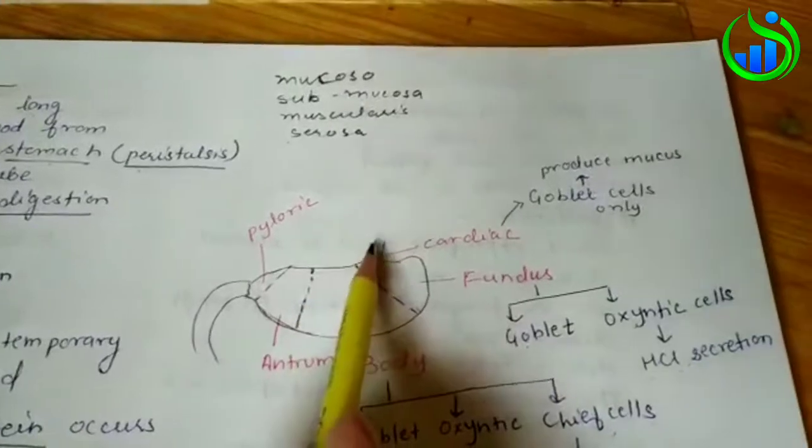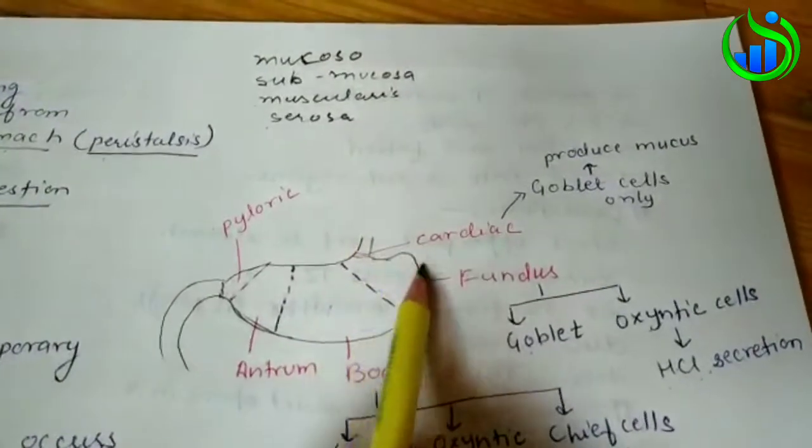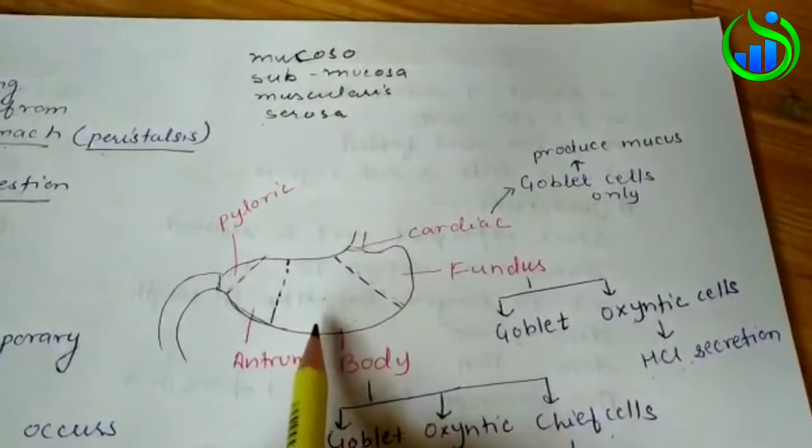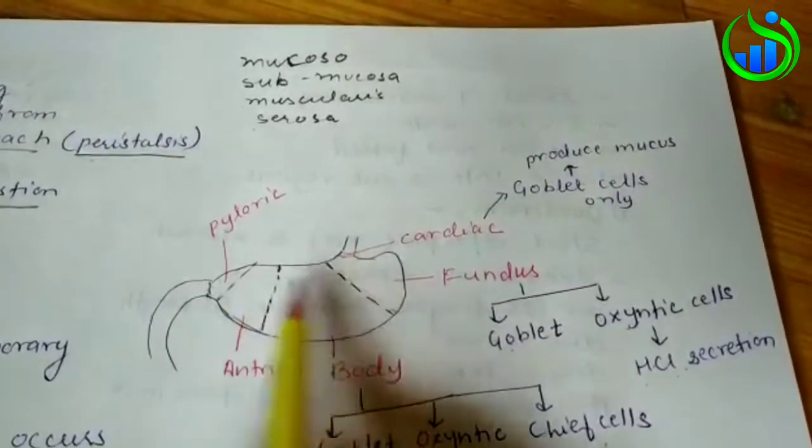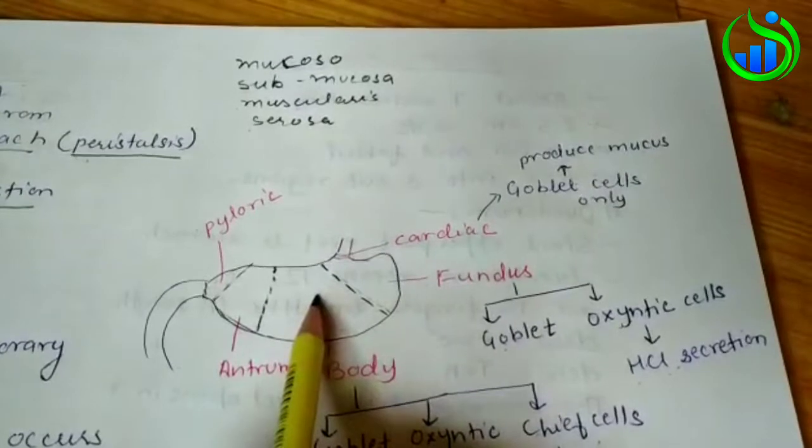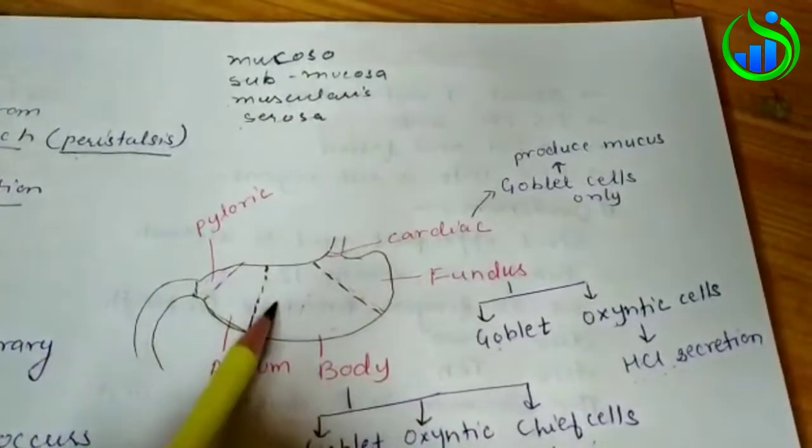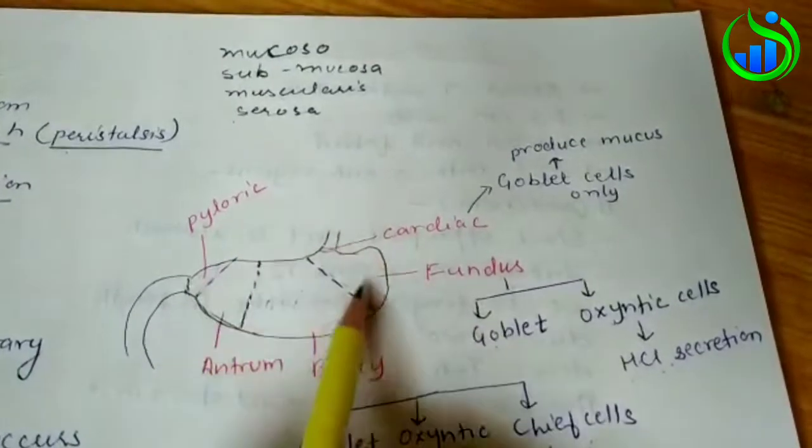The stomach structure: the stomach is a dilated organ where food is stored and protein digestion occurs.